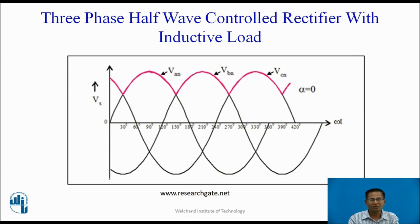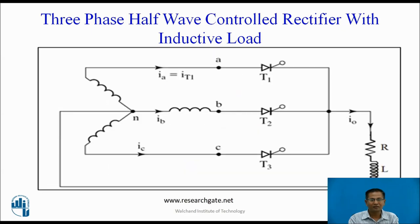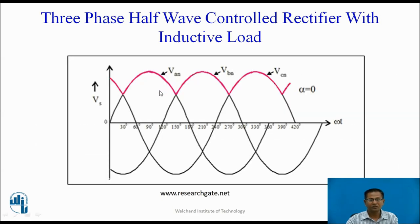These are the waveforms for alpha equal to zero degree. At omega t equal to pi by 6 plus alpha, the gate pulse is applied to thyristor T1. So thyristor T1 conducts. Once T1 conducts, the current flows through the source, T1, load, back to the neutral, and phase VAn appears across the load from pi by 6 to 5 pi by 6.